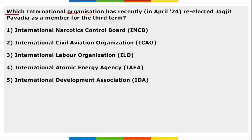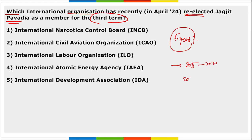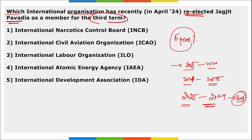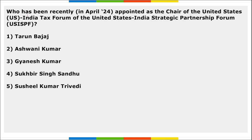Next: which international organization has reelected Jagjit Pavadia as a member for a third term? Each term is five years. Her first term was from 2015 to 2020, second term from 2020 to 2025, and she has now been elected for a third term from 2025 to 2029. She is a member of the International Narcotics Control Board (INCB). India's Jagjit Pavadia has been reelected for her third consecutive term.